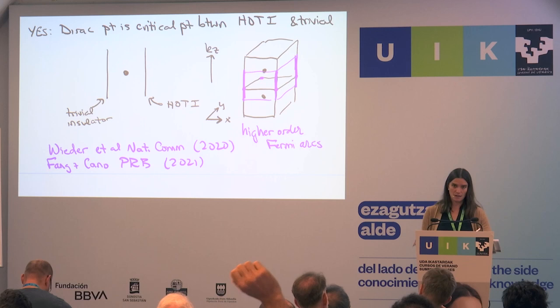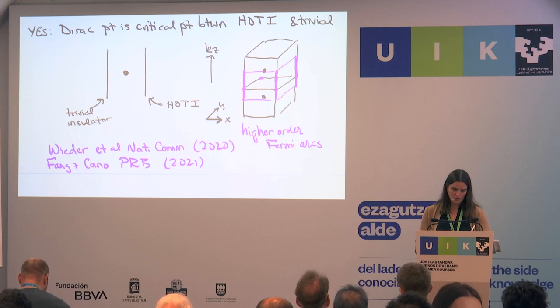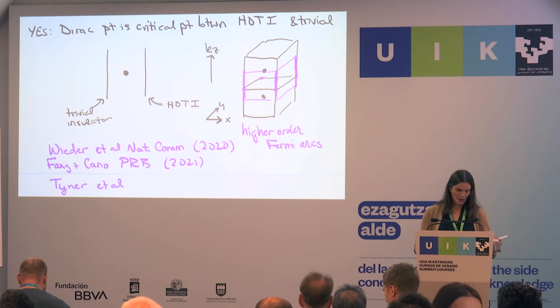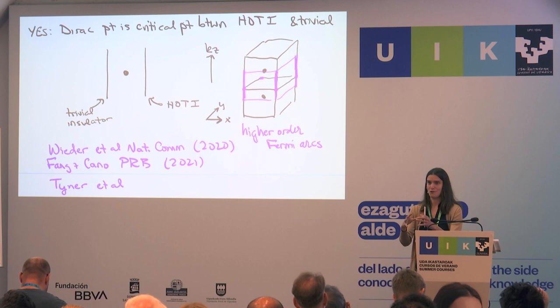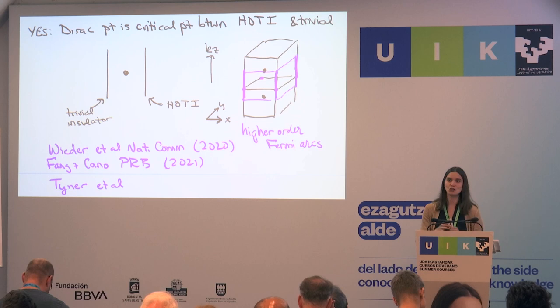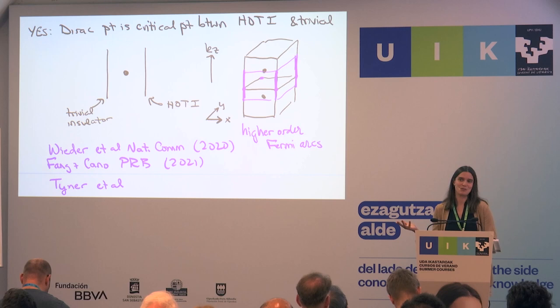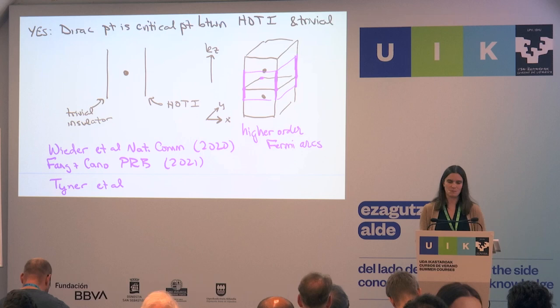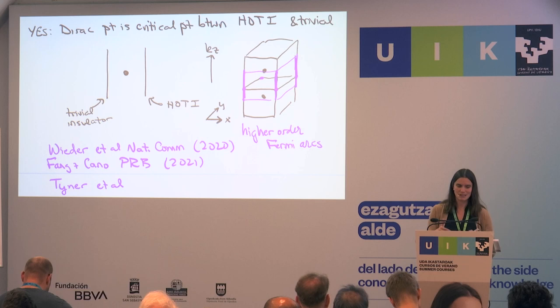There's another reference showing a different perspective from Pallab Goswami's group, where they showed that a Dirac fermion is a source of a non-Abelian SU(2) generalization of Berry curvature, which takes into account all these crystal symmetries. So there is a way that you can have a topology of a Dirac point if you take into account the crystal symmetry. I think it's exactly the same as considering the Dirac point to be a critical point between the higher-order TI and the trivial phase.